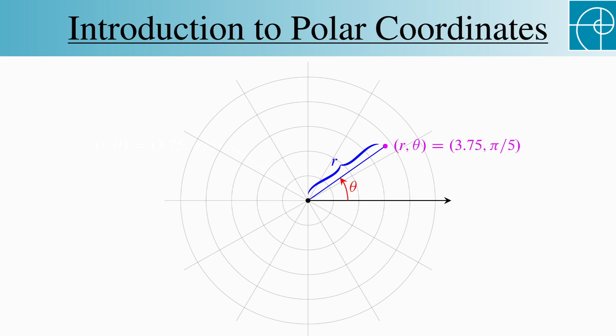Here, points don't have unique representations. A rotation by an angle of 2π, for example, doesn't change the location of the point. A rotation of negative 2π doesn't change it either.